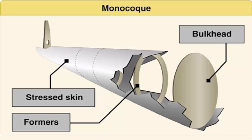For example, an aluminum beverage can supports considerable forces at the ends of the can. But if the side of the can is deformed slightly while supporting a load, it collapses easily. Because most twisting and bending stresses are handled by the external skin rather than by an internal framework, the need for internal bracing was eliminated or reduced, saving weight and maximizing space.